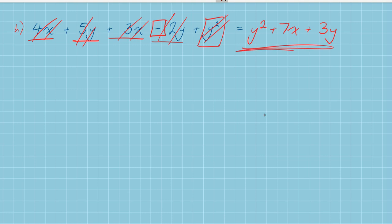Now remember, the order of these doesn't matter. If you wrote it as Y squared plus 3Y plus 7X, it's still the correct answer. What does matter though is these operations. It has to be plus 7X. It has to be plus 3Y. Otherwise we've got a problem.